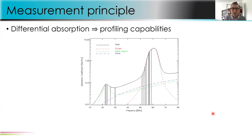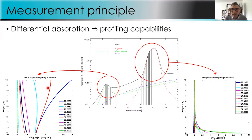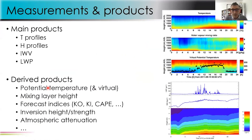How can we get profiling capabilities from passive observations? The idea is to have differential absorptions — different channels correspond to different absorptions, meaning each channel can see a different depth in the atmosphere. This is illustrated through the so-called weighting functions. Here you see profiles of weighting functions, which tell you the contribution of different layers to the observations. Smooth weighting functions allow retrieval of water vapor integrated content and some profile information, while temperature weighting functions peak sharply close to the surface, giving information about temperature profiles in the boundary layer.